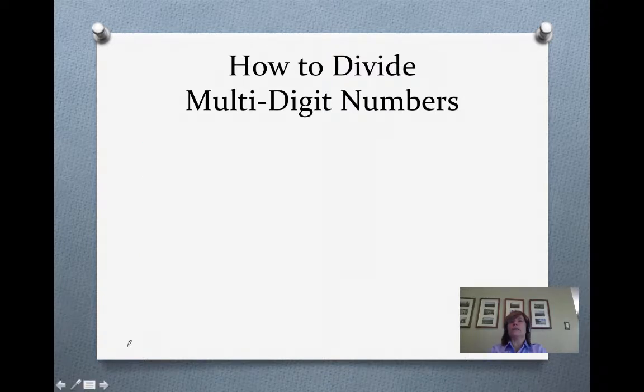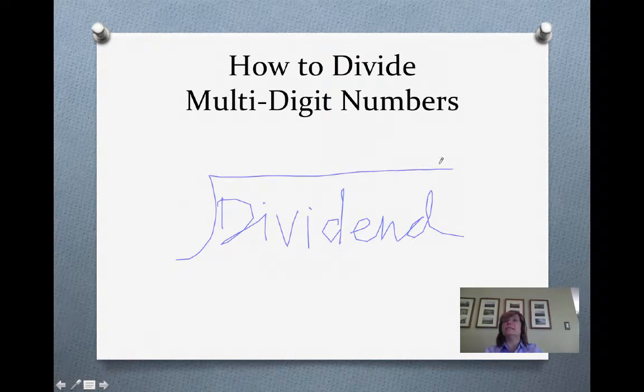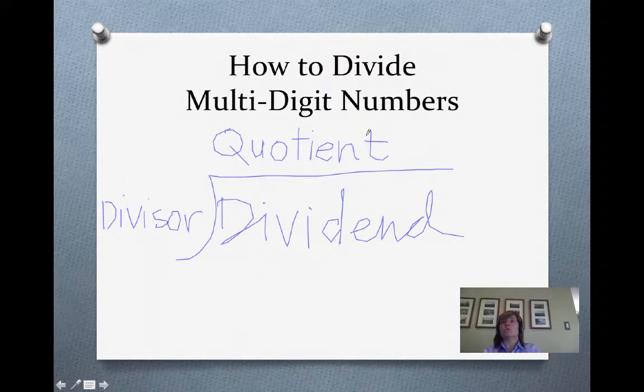One more thing we should probably review is the name of the parts of a division problem. These terms should all be reviewed, but let's make sure you know them. First, we have a dividend, which is simply the number we will be dividing up. Next, we have the divisor. The divisor tells us how many pieces we want in a group. Finally, we have the quotient, which tells us how many groups we will have once we have divided the dividend by the divisor.